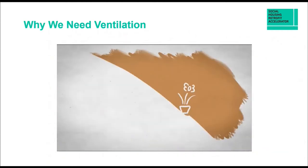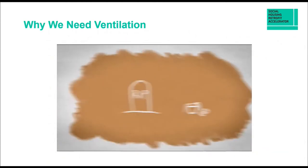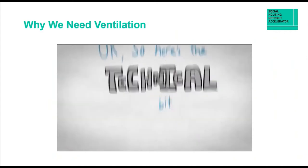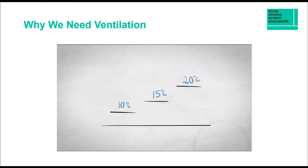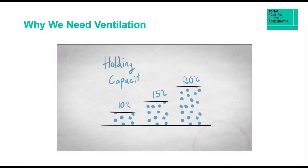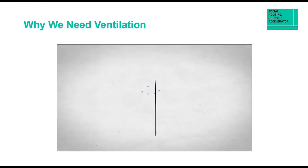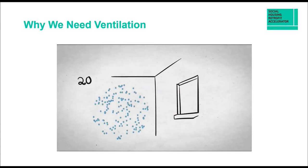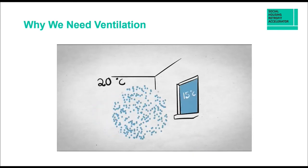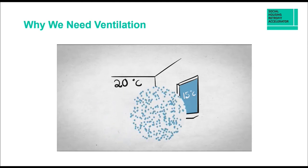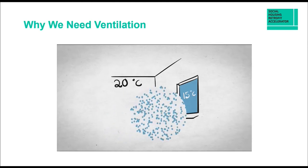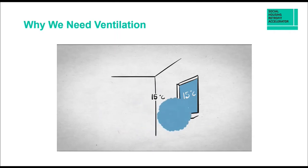If there was no water vapour in the air, nothing would be able to live. At different temperatures, air can hold different amounts of water vapour — the warmer the air, the more moisture it can hold, known as its holding capacity. When there is more water vapour than the air can hold, it becomes full and condenses into liquid water. This is how rain is formed outside. It also happens when warm, moisture-rich air meets a cold surface, like a single-glazed window in winter — condensation forms as the air suddenly cools and the holding capacity is reduced.